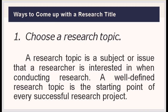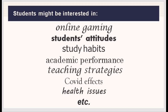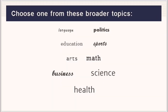So what are the ways to come up with a research title? First, choose a research topic. A research topic is a subject or issue that the researcher is interested in when conducting a research. A well-defined research topic is the starting point of every successful research project. Selecting a topic is the most important part of the research process. Students may encounter two problems: too many ideas or no idea at all. Some students might have lots of ideas — they might be interested in online gaming, students' attitudes, study habits, academic performance, teaching strategies, COVID effects, health issues, etc. So the first thing you have to do is to choose one from these broader topics.